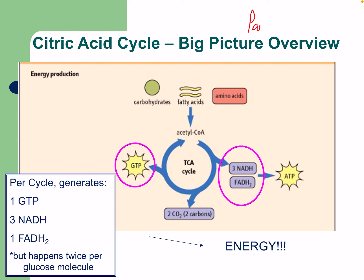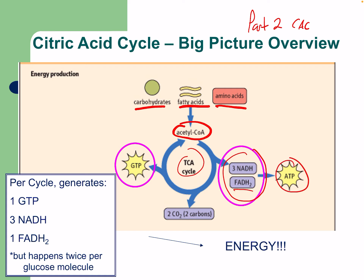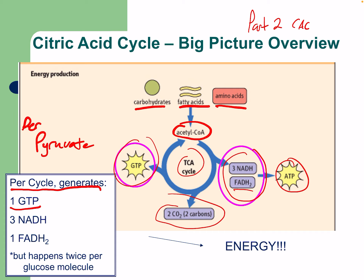Hello everyone, welcome to part two looking at the citric acid cycle. We'll start with the overview from our last lecture. Carbs, fatty acids, or amino acids can become acetyl-CoA entering the citric acid cycle. We produce three NADH and one FADH2, two CO2s, and one GDP per cycle — and remember this occurs per pyruvate, so it happens twice per glucose molecule.